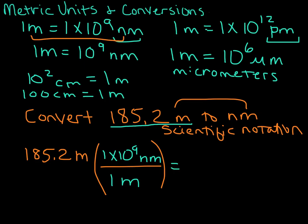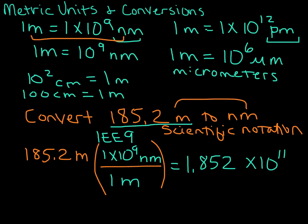Now when I put this in my calculator, I'm going to put in 185.2 and then multiply it, because 10 to the 9th nanometers is on top. You'll enter it using the E or EXP button on your calculator — just put in the exponent, not the 10. So enter 1 E 9. Don't put in 1 times 10 to the 9th power, or else your calculator, depending on the model, will be confused and put in an extra decimal place. So multiplying that out, we end up with 1.852 times 10 to the 11th nanometers.